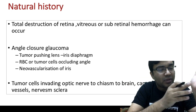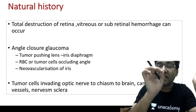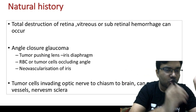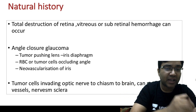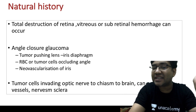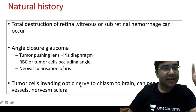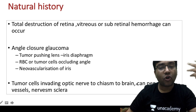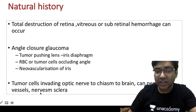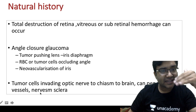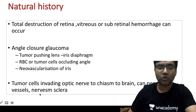The tumor cells can spread from the optic nerve to the chiasma and then to the brain. The most common route of metastasis of retinoblastoma is via the optic nerve. They can also penetrate through blood vessels, along nerves, or through the sclera, causing extraocular or orbital retinoblastoma.